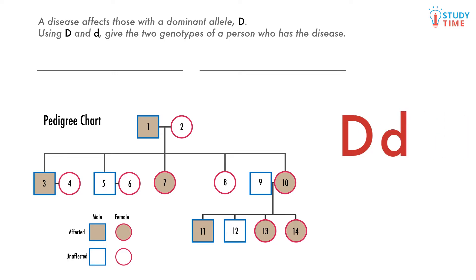We could also have one dominant and one recessive allele, which is called heterozygous dominant. Here hetero means different, and again the dominant means that the dominant allele is expressed. So those are our answers.